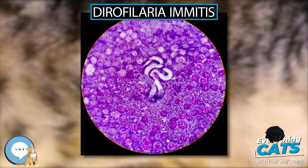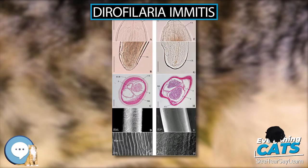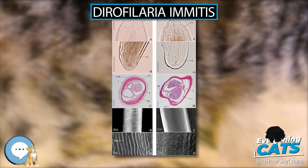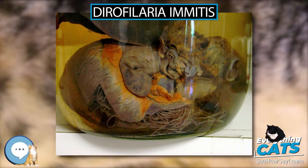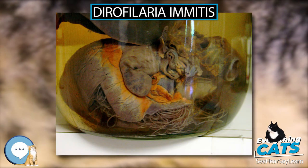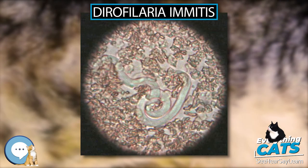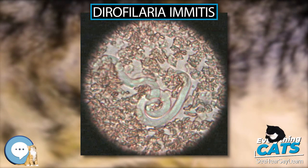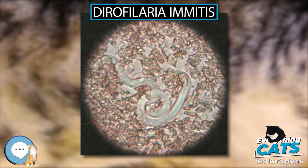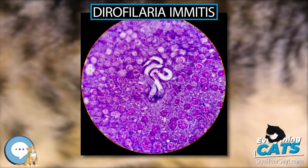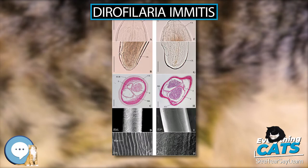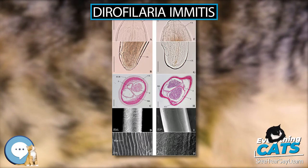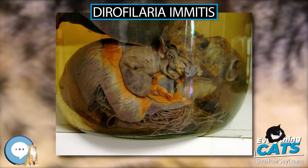Dirofilaria immitis is commonly called the heartworm; however, adults often reside in the pulmonary arterial system — the lung arteries — as well as the heart. A major effect on the animal's health is damage to lung vessels and tissues. In cases of heavy worm burden, adult heartworms may migrate to the right heart and pulmonary artery. Heartworm infection may result in serious complications, typically culminating in the host's death, most often as the result of secondary congestive heart failure.